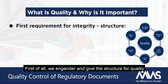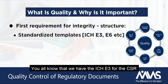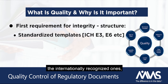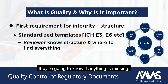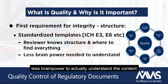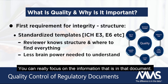First of all, we engender or give the structure for quality by having nice standardized templates. You all know that we have the ICH E3 for the CSR and E6 for your protocol and ICF. When we use those internationally recognized templates, the reviewer knows the structure and they're going to know where to find everything — they're going to know if anything's missing. Using those recognized templates also requires less brain power to actually understand the content. You don't have to think about the structure; you can really just focus on the information as it is in that document.